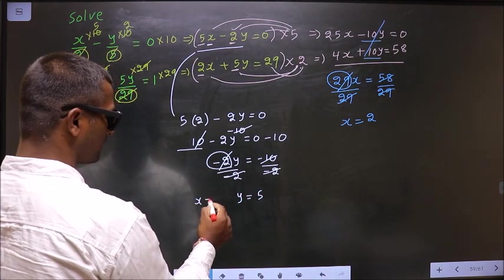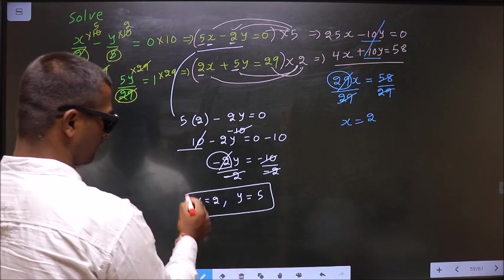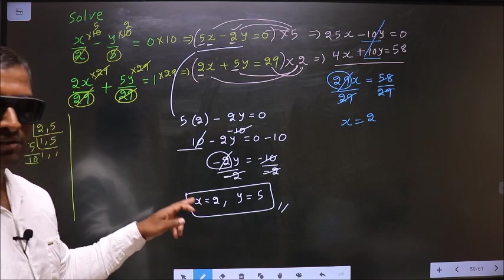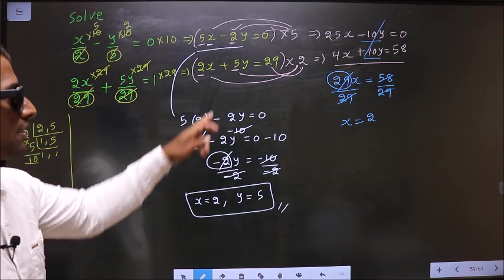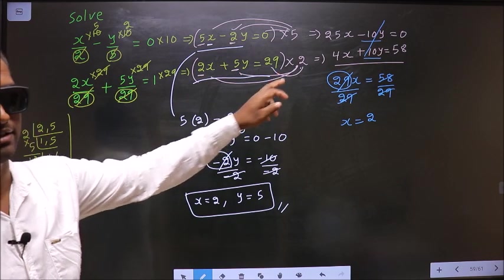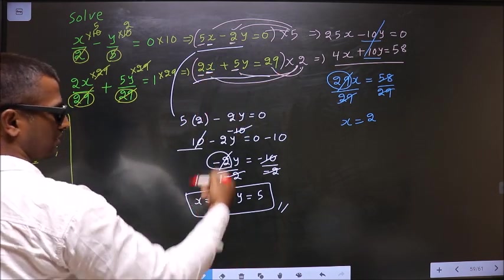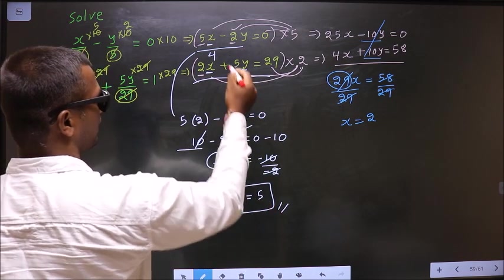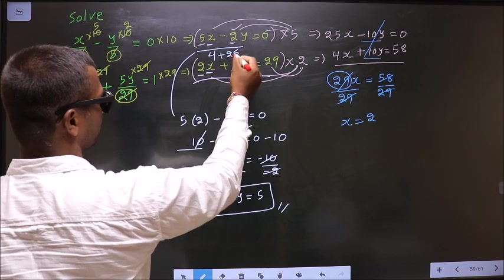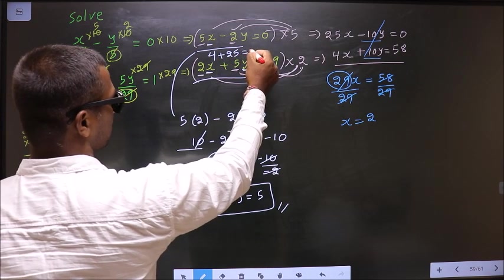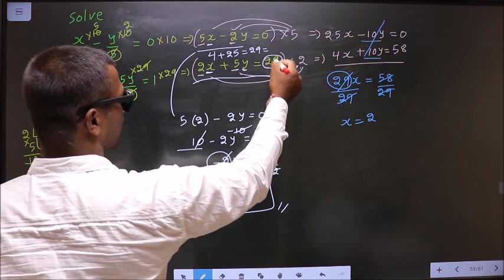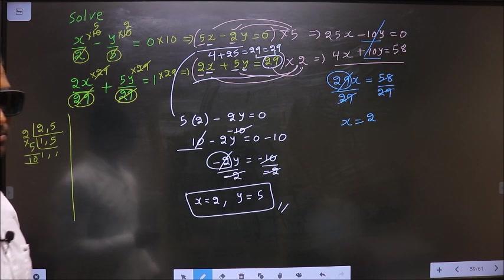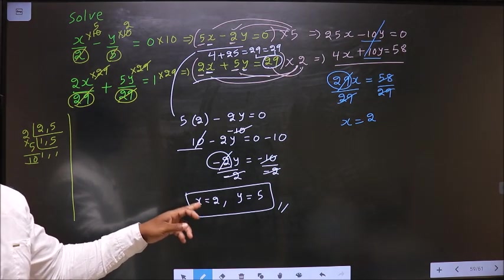Earlier I got x equal to 2. This is the answer. Now to confirm this answer, replace this in this equation. So 2 into x, so 2 into 2, 4. Plus 5 into y, plus 5 into 5 is 25. So plus 25. 4 plus 25 is 29. On the other side also, I have 29 present. I got these two numbers same. That confirms our answer is correct.